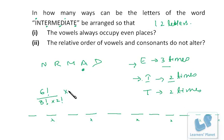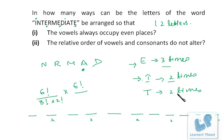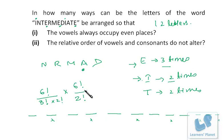The remaining 6 consonants can be arranged in the 6 odd positions in 6! ways. Since T is repeated 2 times among the consonants, divide by 2!. So the total number of arrangements = (6! / (3! × 2!)) × (6! / 2!). You can solve this out to get the final answer.